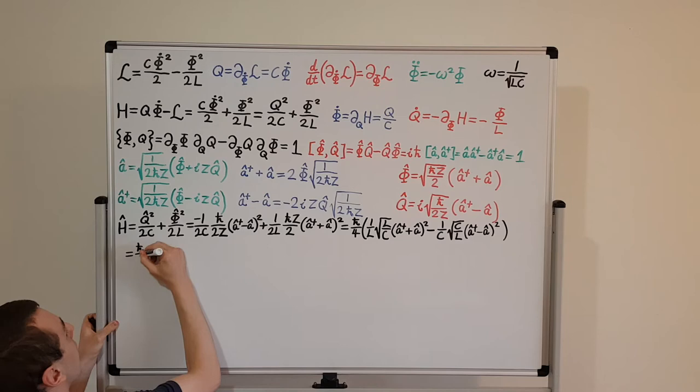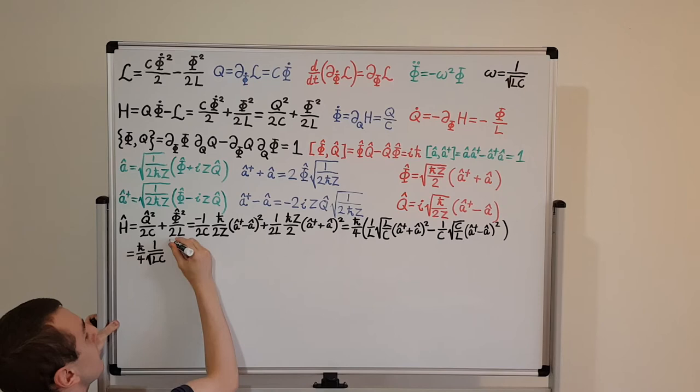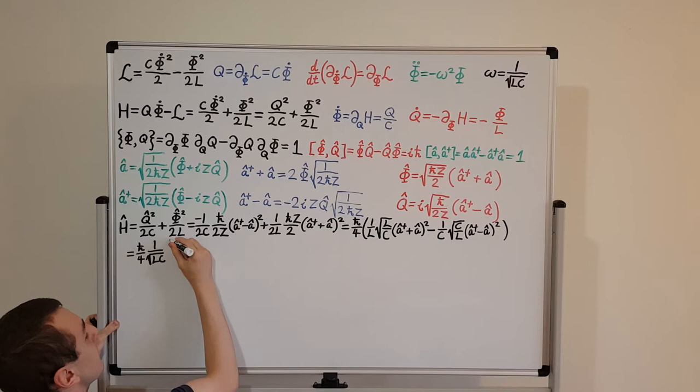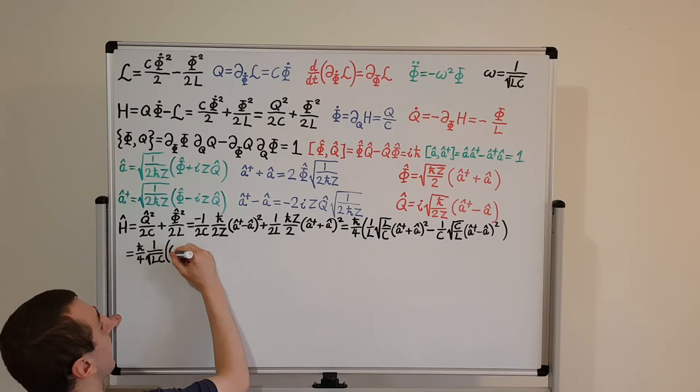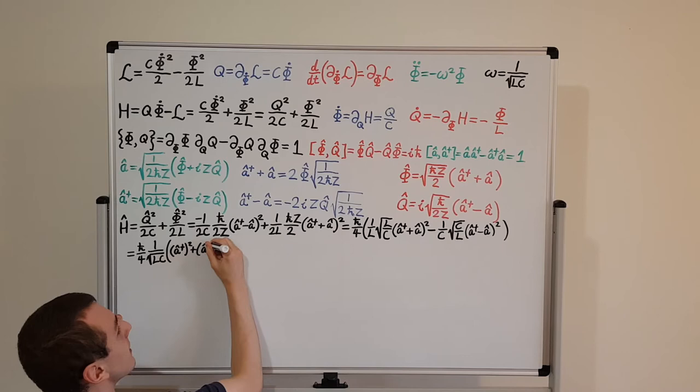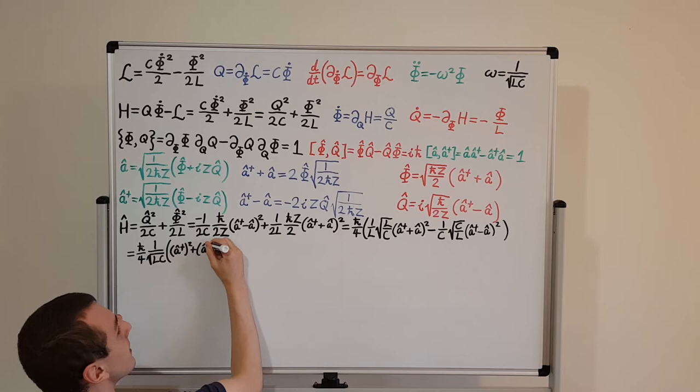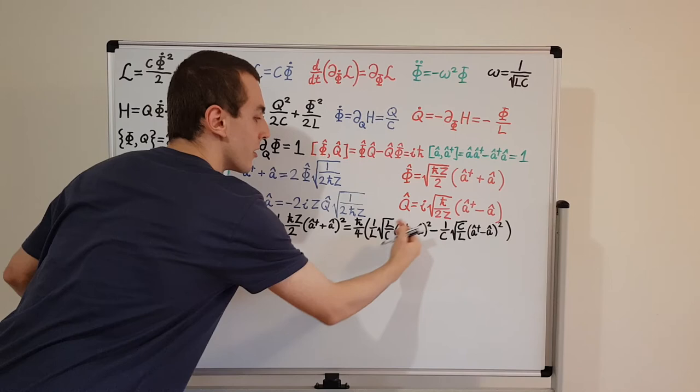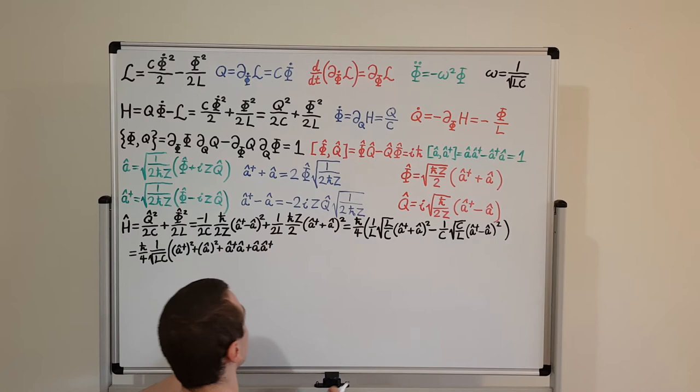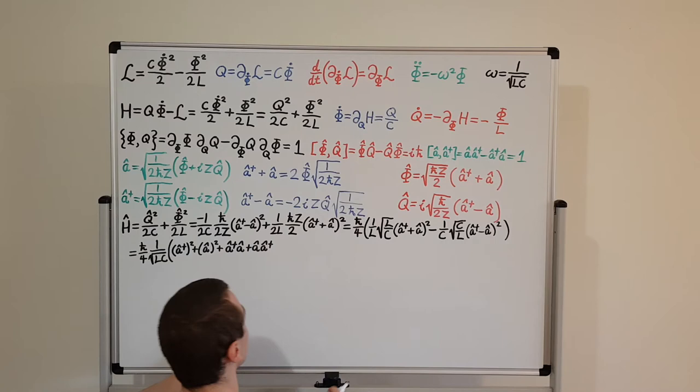Now let's expand the terms inside the brackets. From the sum squared (a dagger plus a)², we get: a dagger squared, a squared, a dagger a, and a a dagger.